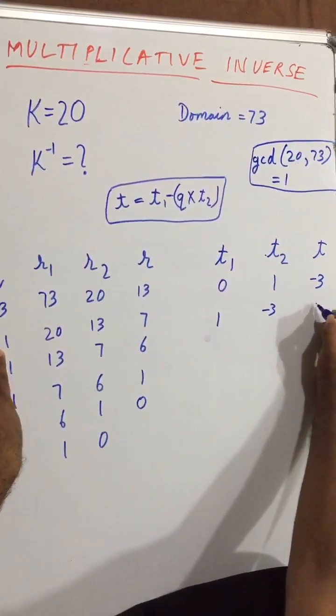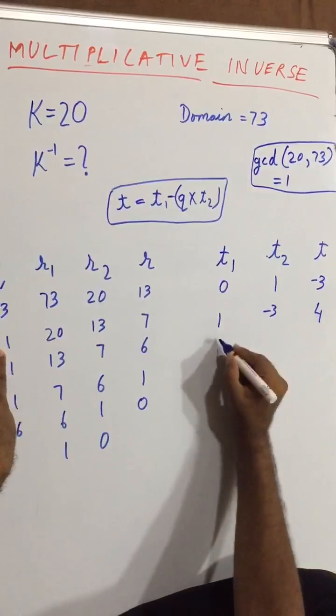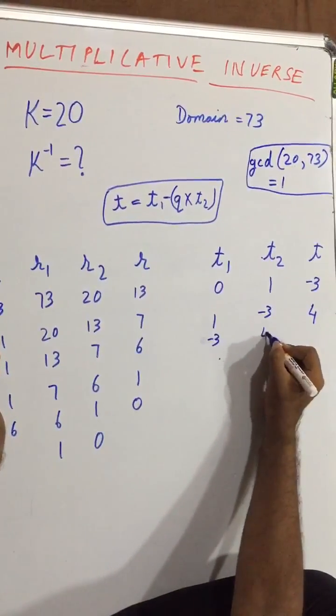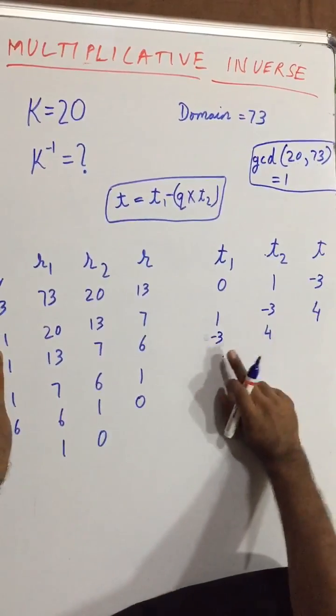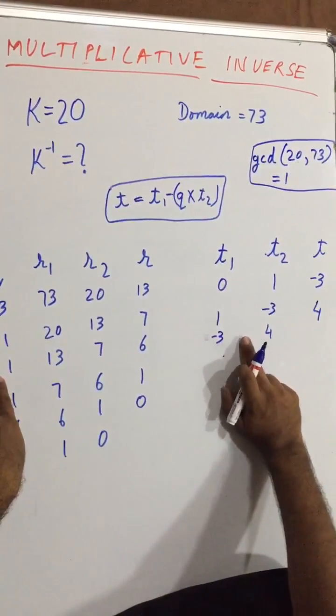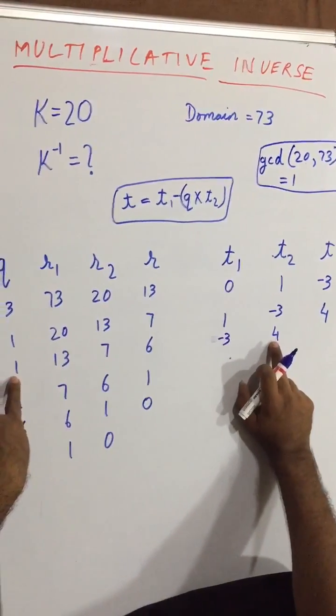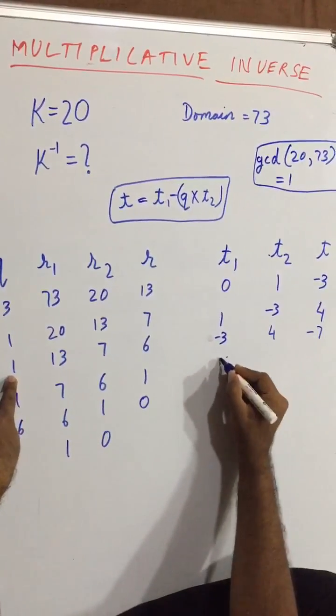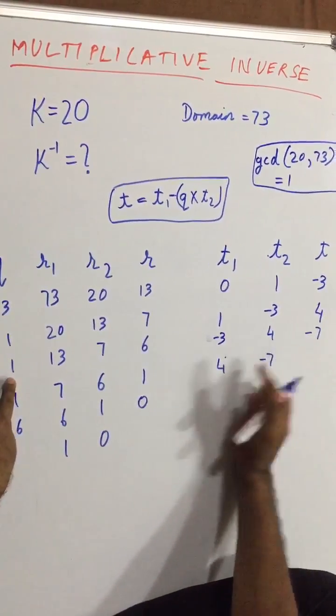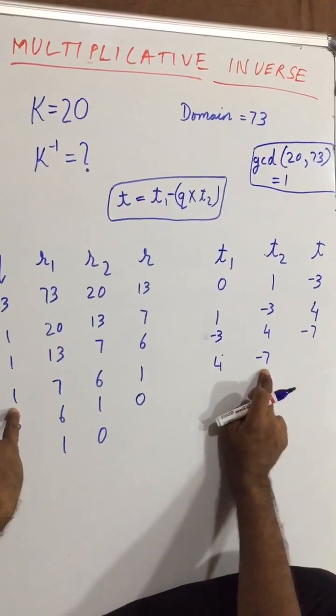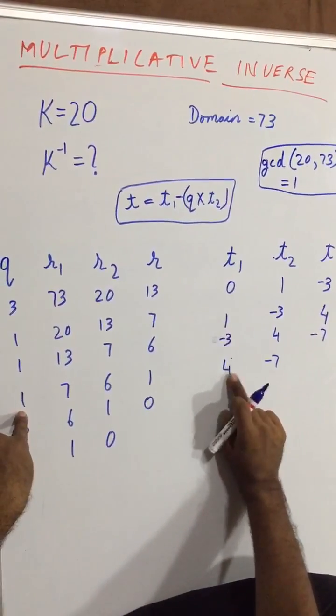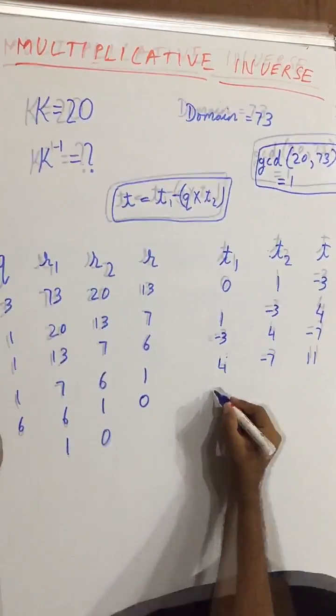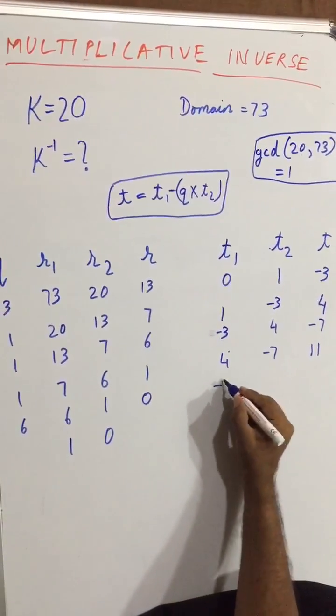Now minus 3 and 4. So here minus 3 minus 4 into 1, which would be giving us minus 7. So 4 and minus 7. Now 4 minus minus 7 into 1, so 4 plus 7, which would be equal to 11.